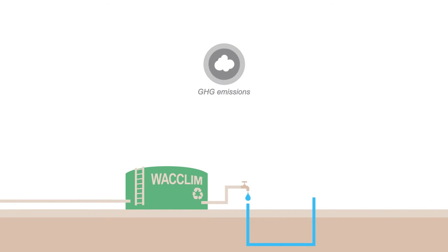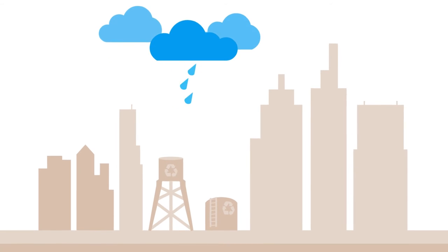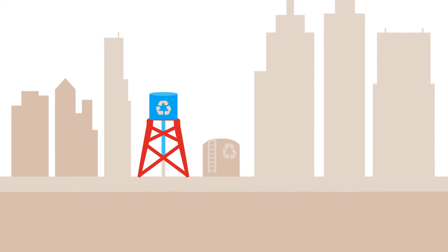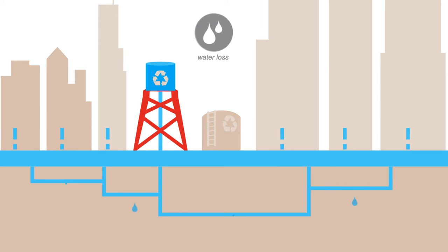We can reduce the carbon footprint by reusing treated wastewater and recycling nutrients. At the same time, we adapt to climate change by making better use of our resources, like reducing water losses and reusing water.